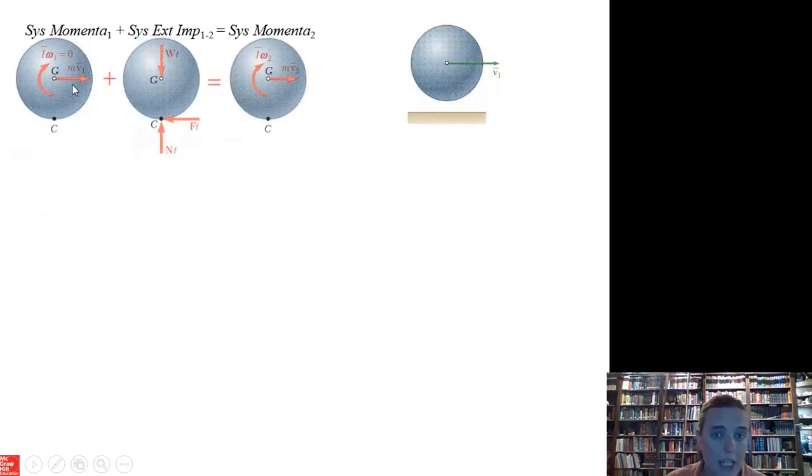Start by drawing your momentum diagram. We start with just a forward velocity, no rotation, so Iω is zero. Then we have forces and moments changing that. We need a good free body diagram showing all the forces. At the very end, the thing is going forward at v2, a new velocity, and it's also rotating. So we have rotational and translational motion at the end.